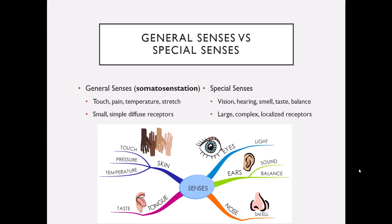Before we get to testing our senses, let's talk about the difference between a general sense and a special sense. When you're a little kid, you always get asked what are your five senses, and we always say touch, seeing, hearing, taste, and smell. But really we have a lot more senses than that, and we categorize them based on the complexity of the receptor. The general senses — of which touch is one — are generally simpler receptor types that tend to be smaller and diffuse, spread throughout the body, very often in the skin but sometimes in our internal organs as well.